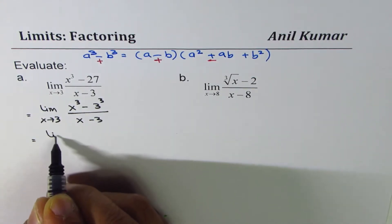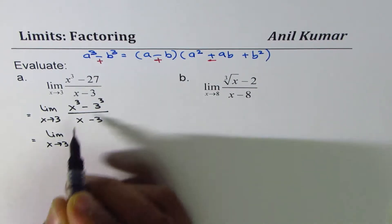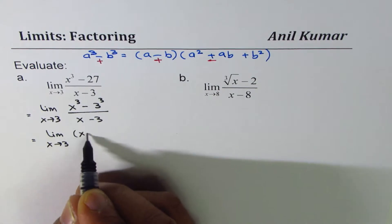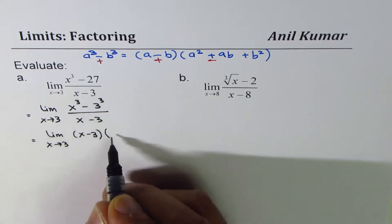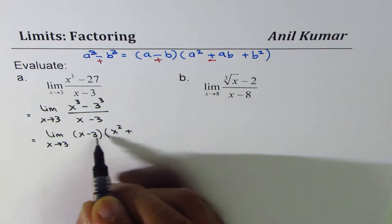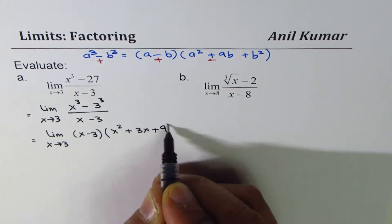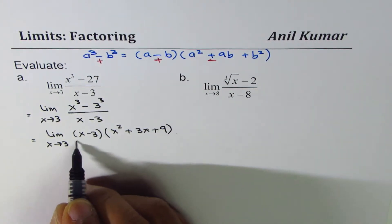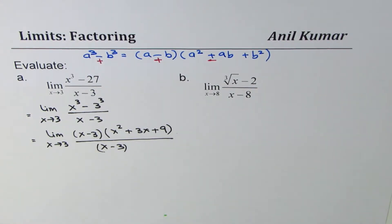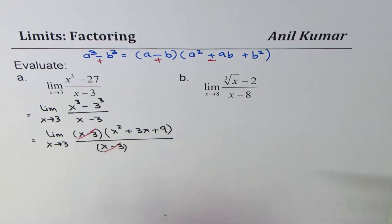Now I'll factor it. Limit as x approaches 3. Using the a cube minus b cube formula, we get (x minus 3) in the numerator times (x squared plus 3x plus 9), divided by (x minus 3). The (x minus 3) terms cancel out.